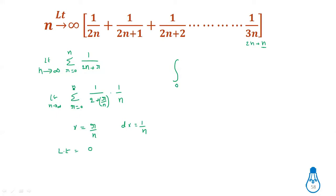For the upper limit, r = n, so n/n = 1. Therefore, upper limit value is 1. The integral becomes: integral of 1 divided by (2 + x) into dx, from 0 to 1, with r/n replaced by x.